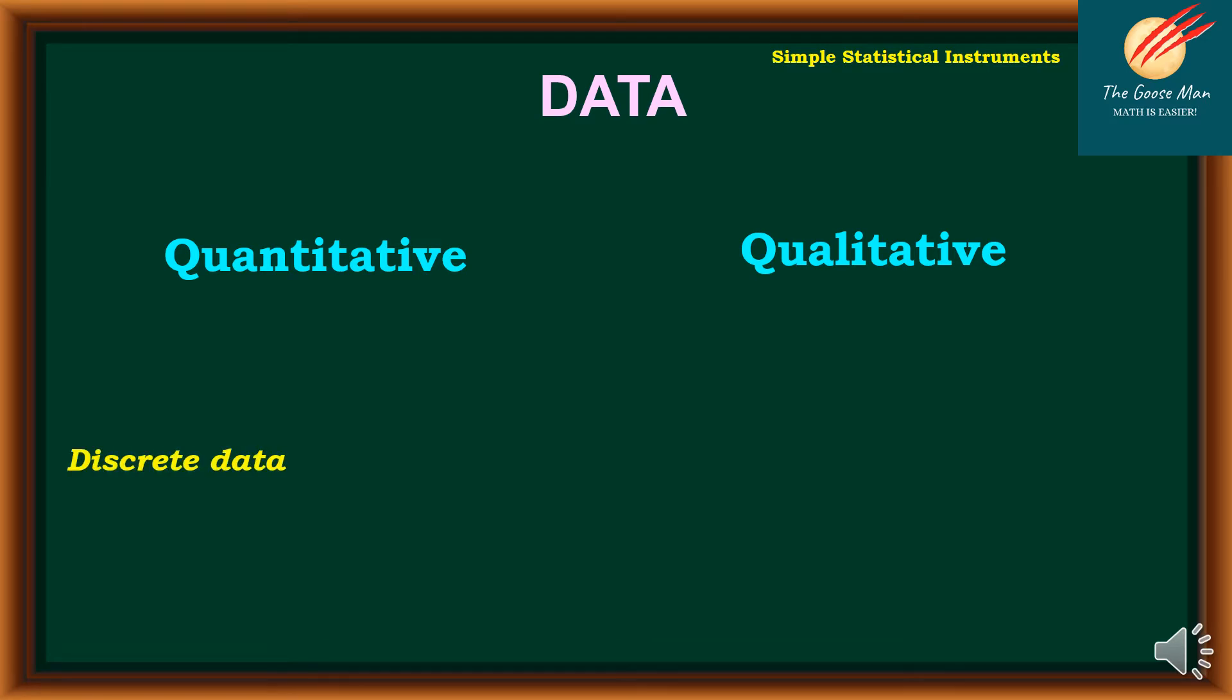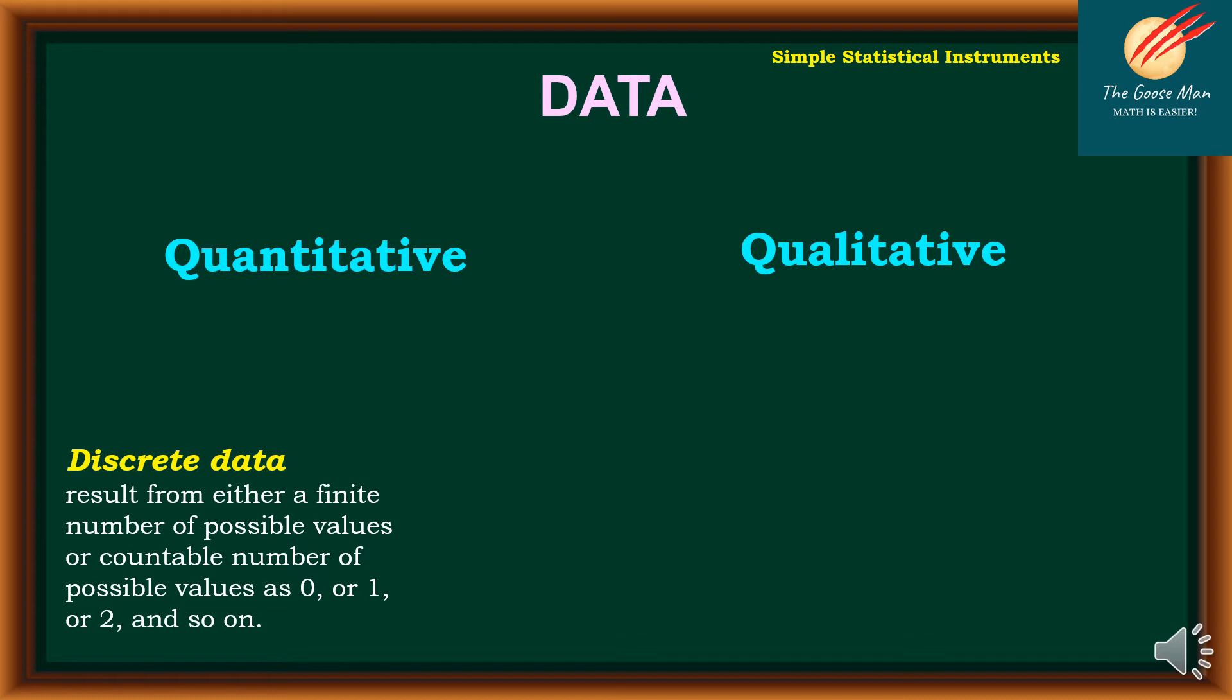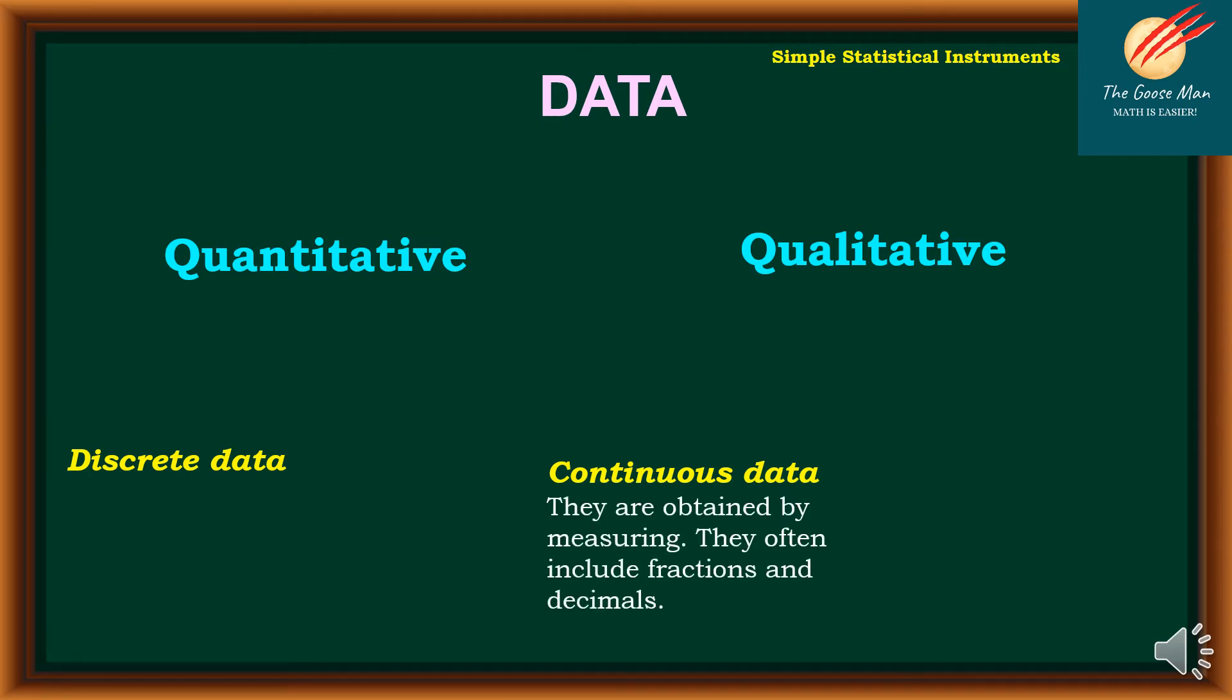Furthermore, quantitative data can be subdivided into discrete data. Discrete data results from either a finite number of possible values or countable number of possible values such as zero, one, two and so on and so forth. On the other hand, continuous data are maintained by measuring. They often include fractions and decimals. Data is a collection of information that can be classified as quantitative or qualitative, but quantitative can be divided into discrete or continuous data.